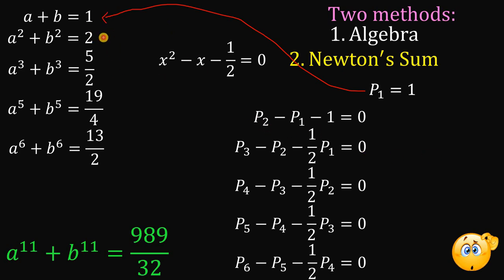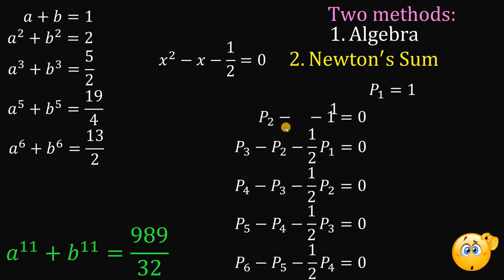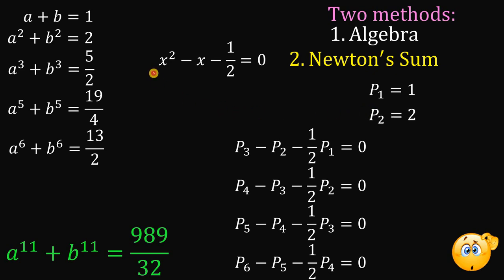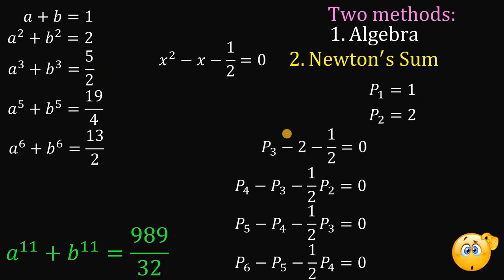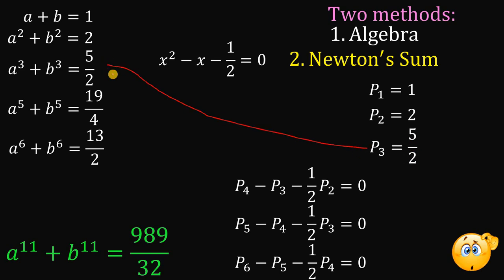Next, p sub 3 or a cubed plus b cubed. We know this is 5 over 2. Let's check using Newton's Sum: p sub 3 minus p sub 2 minus 1 half times p sub 1 equals 0. Substituting p sub 2 equals 2 and p sub 1 equals 1, we get negative 2 minus 1 half, which is negative 5 over 2. Adding 5 over 2 to both sides, we get p sub 3 equals 5 over 2, which is exactly what we expect.